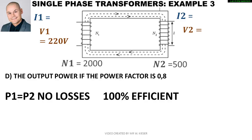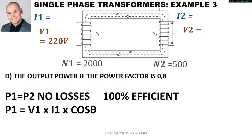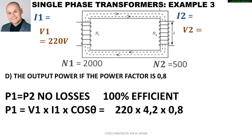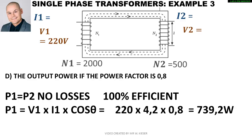To find the output power if the power factor is 0.8, we assume the transformer is 100% efficient, so there are no losses. We calculate P1 as V1 multiplied by I1 multiplied by the power factor. V1 is 220 volts, I1 is 4.2 amps, and cos theta is 0.8, giving us 739.2 watts.